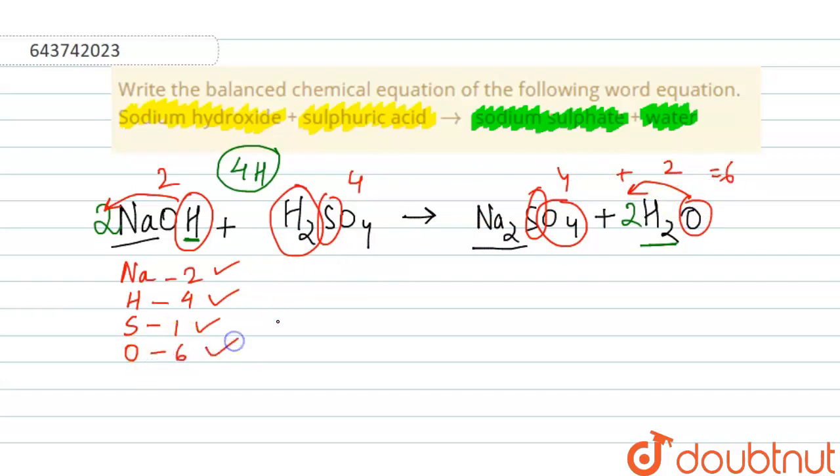This is the way of balancing the equation. So the final balanced equation is 2NaOH plus H2SO4 will give us Na2SO4 plus two moles of water. This is your complete balanced equation. Thank you.